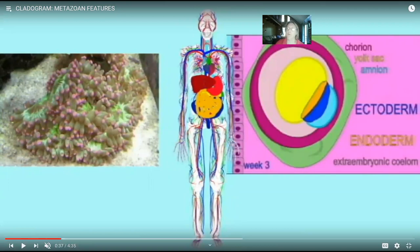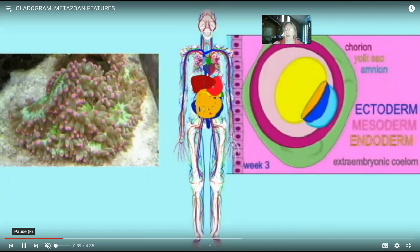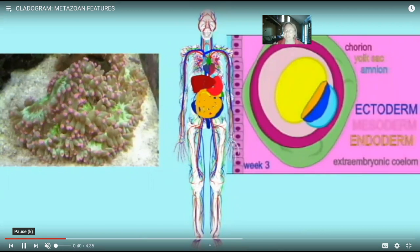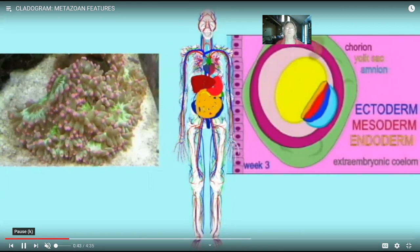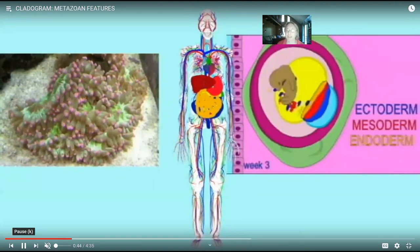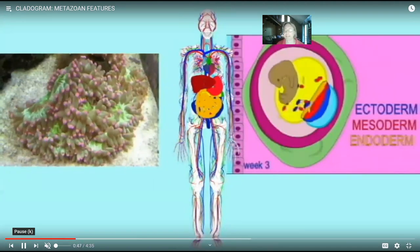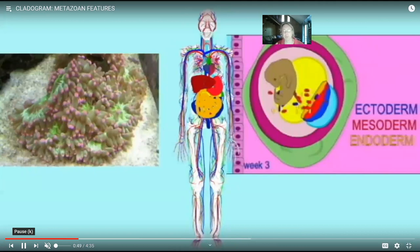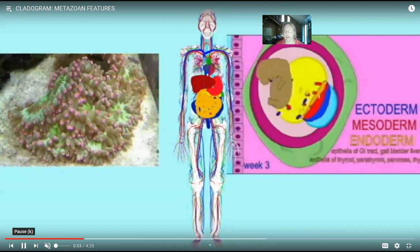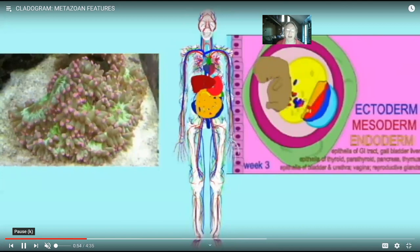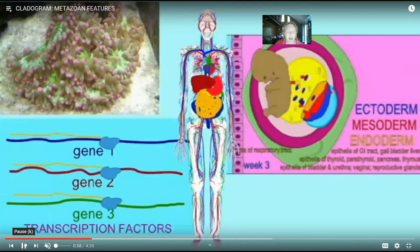Both humans and cnidarians have the tissue layer called ectoderm, which forms their outer epidermis. In humans, it also composes the nervous system. There is also a tissue known as endoderm, which in both forms the cells that line the gut, and in humans also lines the lungs.